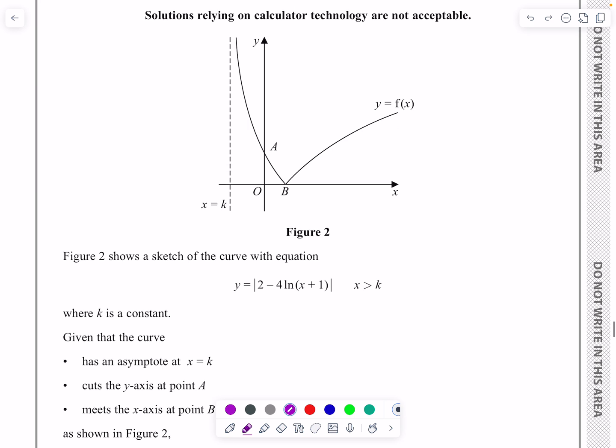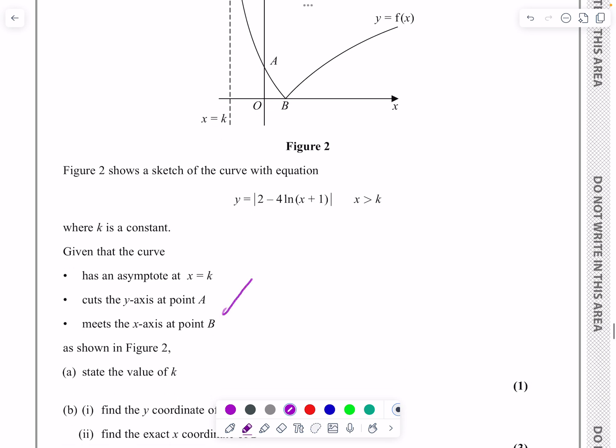So if we look at the question, it says we've got a curve with a sketch of this equation here and it tells me it has an asymptote at x equals k. It tells me it hits the axes at A and B there, and that's what all this information here is telling me.